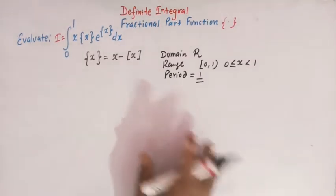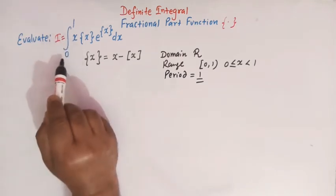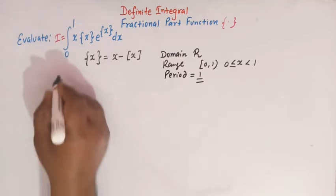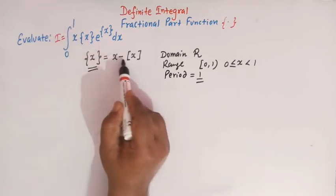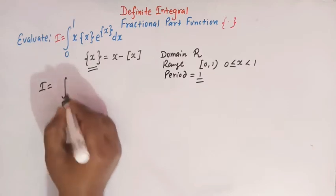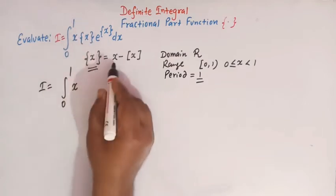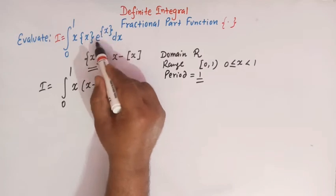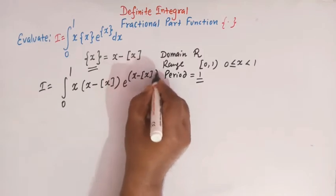Once we have discussed the definition of fractional part function, let us come to the problem. The limits of integration are from 0 to 1 — the lower limit is 0 and the upper limit is 1. We will substitute the value x minus greatest integer of x. So I can be written as the integral from 0 to 1 of the fractional part of x, which is x minus greatest integer x, times e raised to x minus greatest integer x.